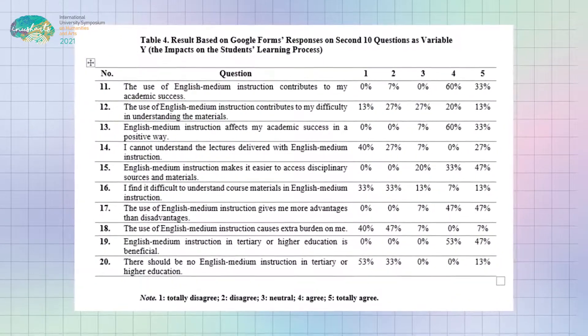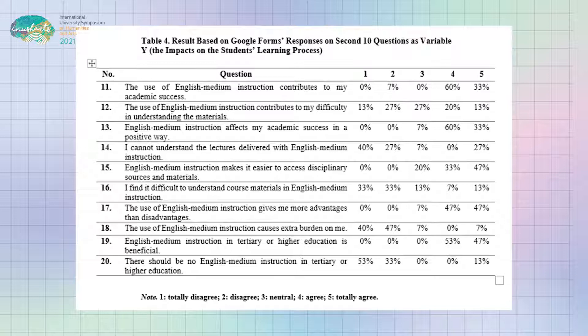Questions 11, 13, 15, and 17 were asked to see if EMI contributed positively by giving them the advantages. Apparently, the majority of the respondents gave positive responses on the questions.